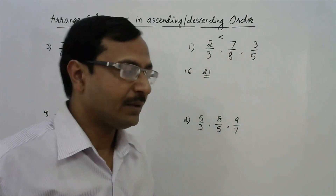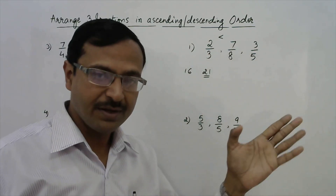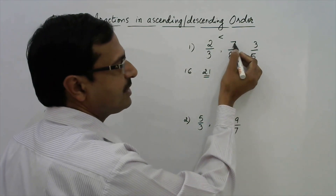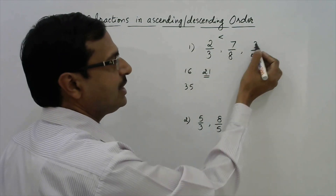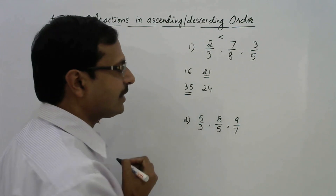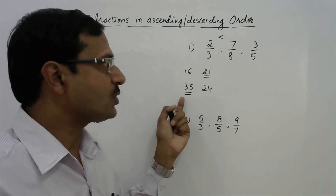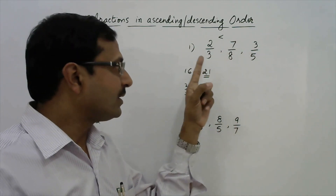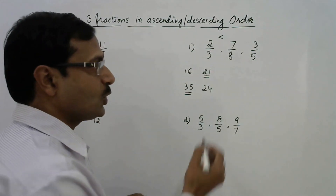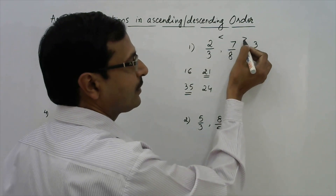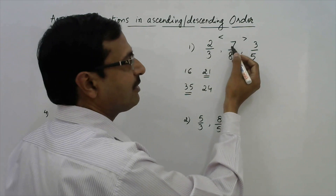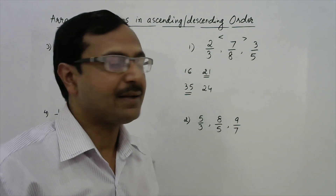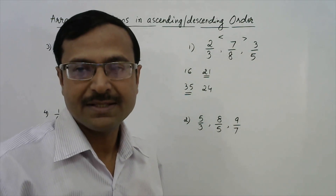Now let us compare either the first with the third or the second with the third. When I compare the second and third — 7/8 and 3/5 — 7 into 5 is 35 and 3 into 8 is 24. Now 35 is greater, obtained by multiplying the numerator 7 with denominator 5. So 7/8 is again greater — 7/8 is greater than 3/5. Now, 7/8 was greater than 2/3 and 7/8 is greater than 3/5. So we have obtained the result that out of these three fractions, 7/8 is the largest.